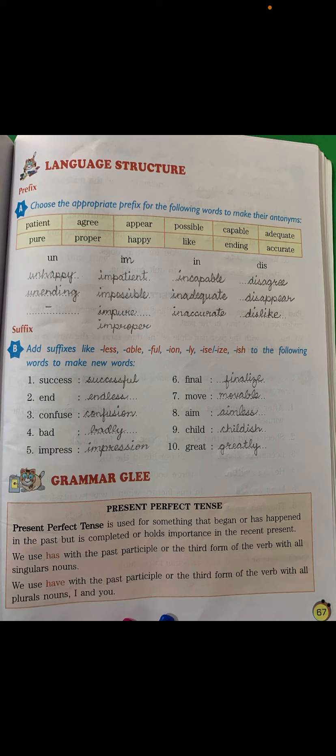Now let's move on to the next exercise — Grammar: Present Perfect Tense. Present Perfect Tense is used for something that began or happened in the past but is completed or holds importance in the recent present. The work started in the past but was completed just now. We use 'has' with the past participle (third form of the verb) with all singular nouns.